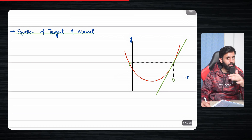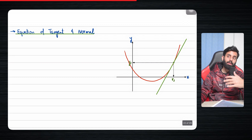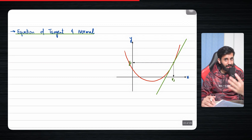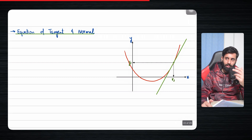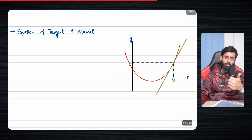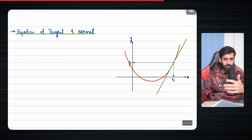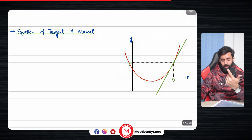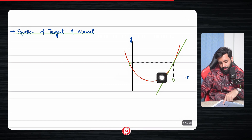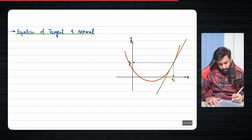From prior knowledge, when you differentiate and plug in the value of x into the dy/dx function, you get the gradient of the tangent. To find the equation of a straight line you need two things: its gradient, and a point through which it passes. As far as the point is concerned, we technically have that — x1, y1.